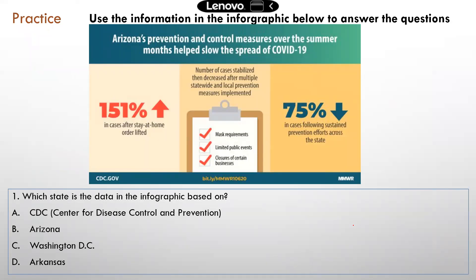Here is a practice question. You can pause the video now and try to answer the question. So you can see this is an infographic — there's some text and some numbers. The most important part is the title: you need to read the title because it tells you what the infographic is about. You can see this infographic is about the results of Arizona's prevention and control measures implemented over the summer months, and whether these measures slowed down the spread of COVID. You can then read the three columns or boxes.